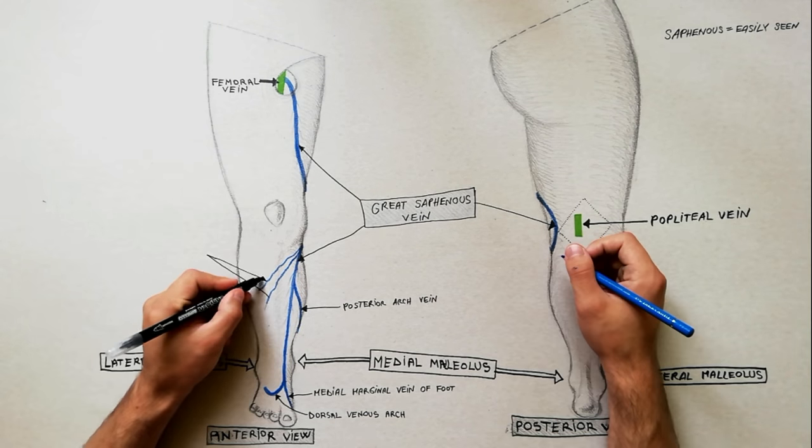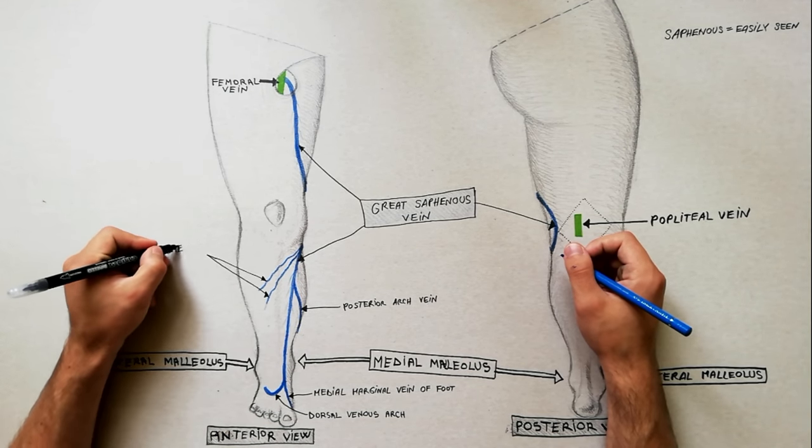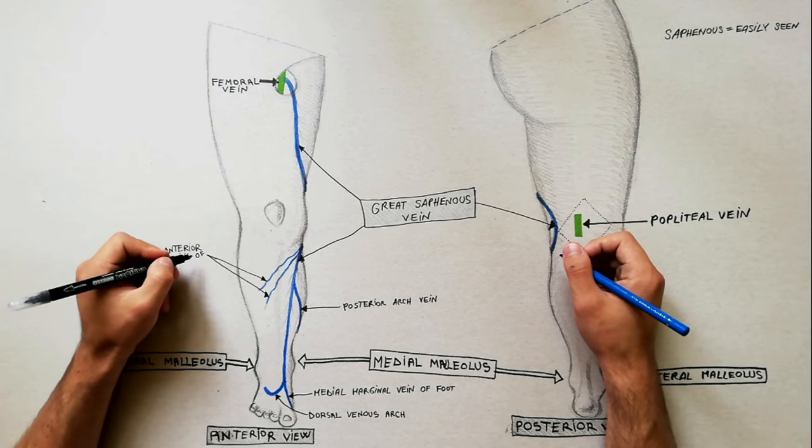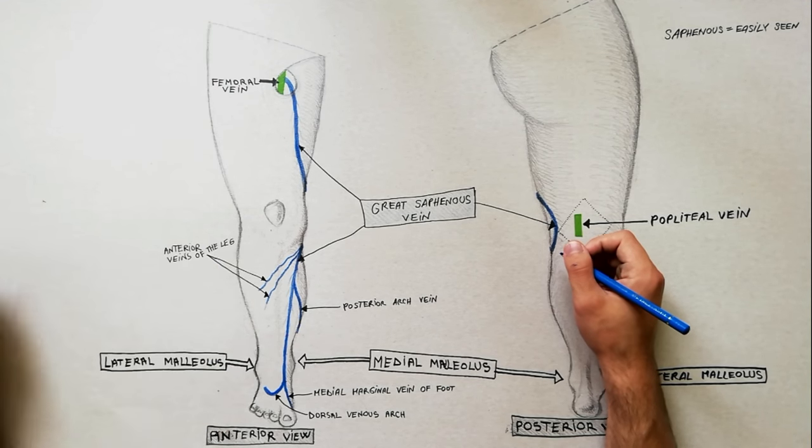Just below the knee, we have anterior veins of the leg. They extend diagonally across the tibia and join the great saphenous vein.